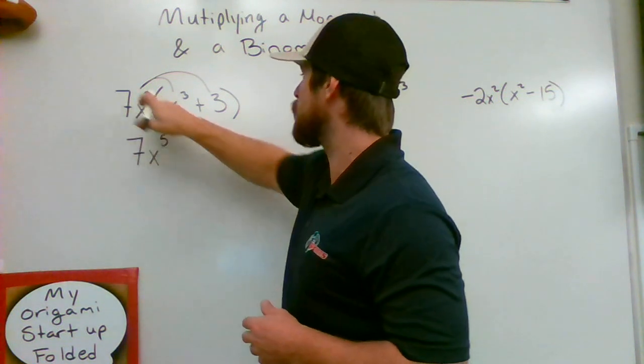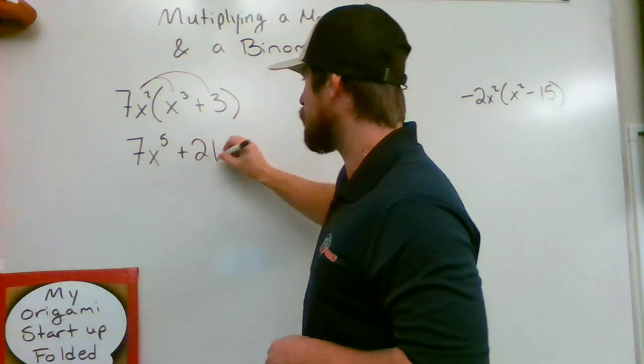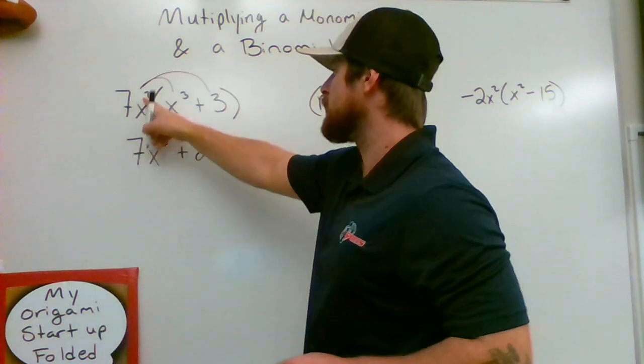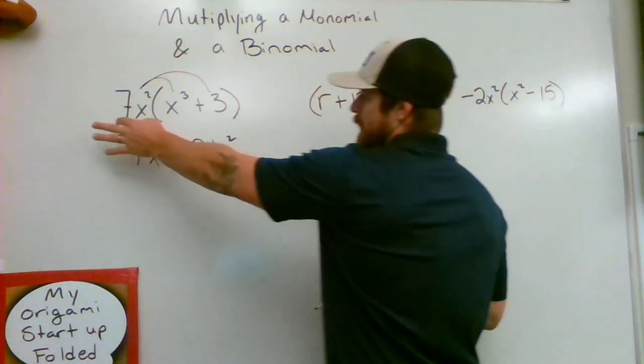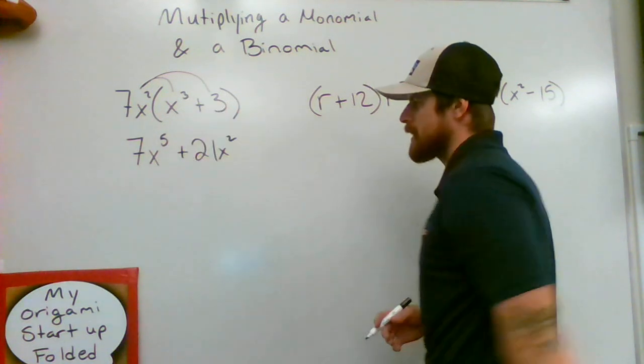And then I'm going to multiply 7x² times a 3, which is going to give me a positive 21. I'm going to be multiplying that 7 and that 3, and then I need to include the x² as well. So that is multiplying 7x² times this binomial, which is two terms on the inside.